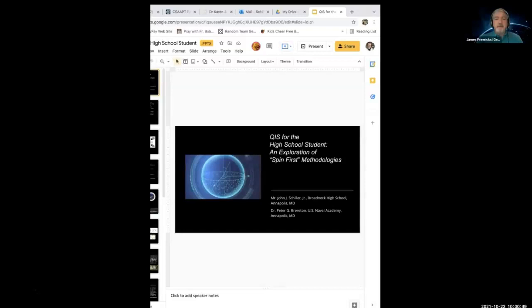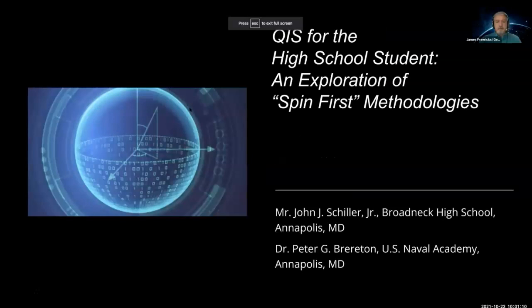I'm Jim Freerichs from Georgetown University. This is actually my second Chesapeake section meeting, and I'm going to be your chair for the next two sessions. We have three talks in this session. Our first talk is by John Schiller from Broadneck High School and Peter Baraton from the U.S. Naval Academy, entitled Quantum Information Science for the High School Student and an Exploration of Spin-First Methodologies. John and Peter, go ahead, share the screen and get started.